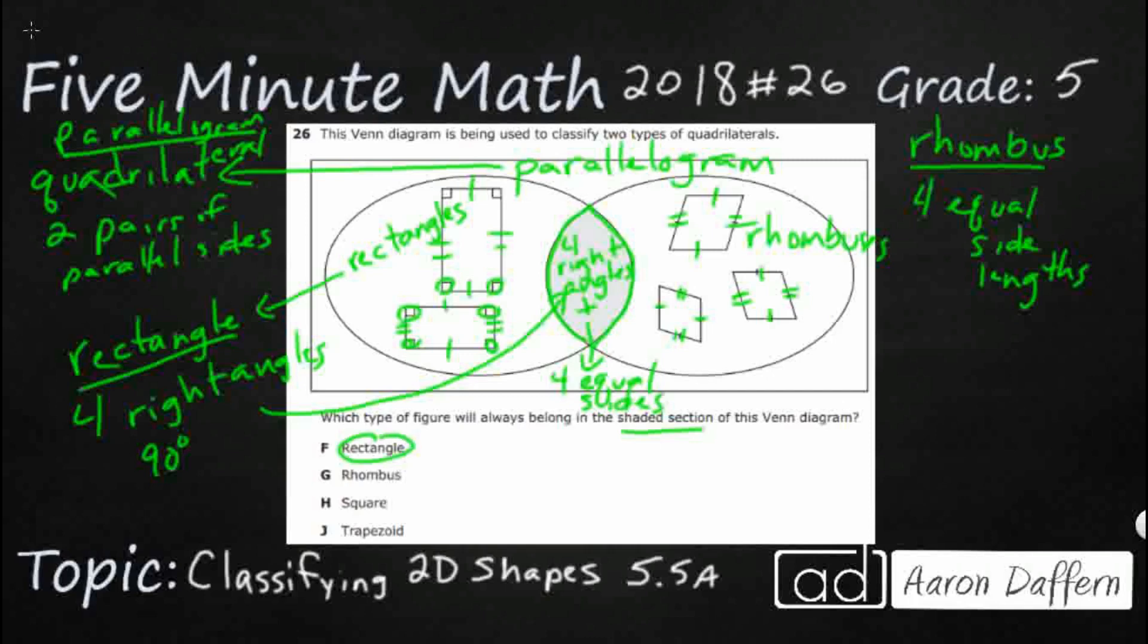Well, a rectangle is definitely not going to work because it does have four right angles, but it does not have four equal sides, so we're not going to look at that. Rhombus is not going to work because it has only one of the two. It has four equal sides, but not four right angles. None of the angles here are right angles.